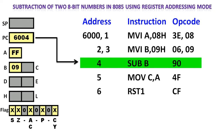Next, the flags will be updated due to the subtraction operation. The D7 bit of the accumulator is 1, so the sign flag will be set. The zero flag is 0 because the accumulator contains a non-zero value. The auxiliary carry flag has been set because a carry was generated from the lower digit to the upper digit. The parity flag has been set to 1 because there are 8 logic 1's in the accumulator, so parity is even. The carry flag is set because a borrow was generated from the D7 bit. This is how the flags are updated.